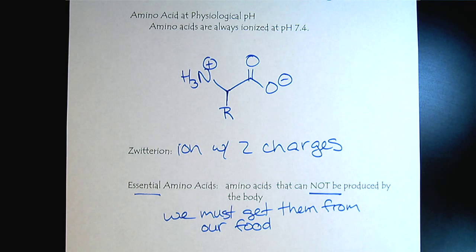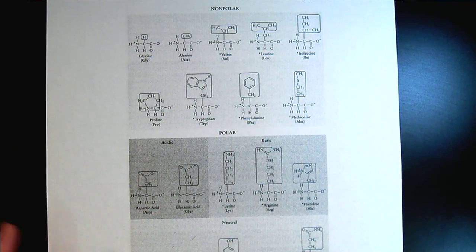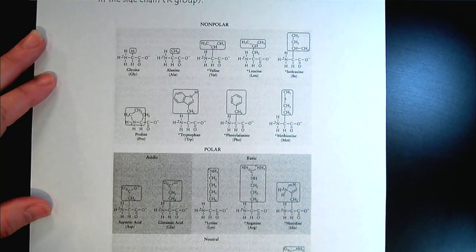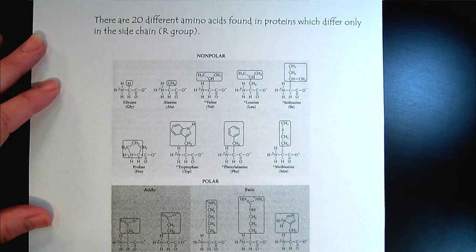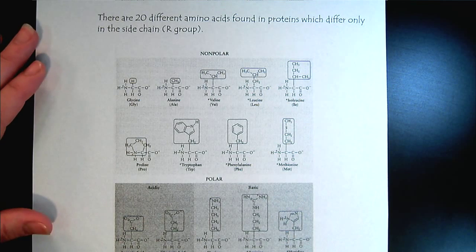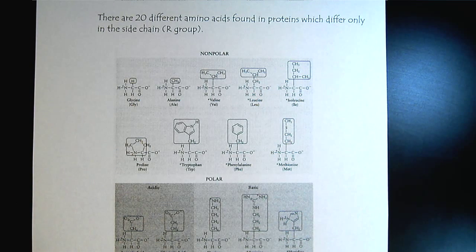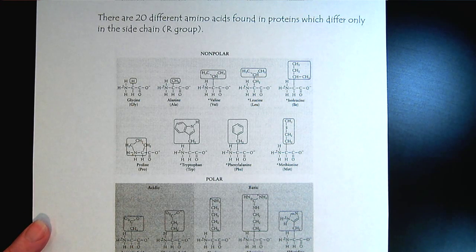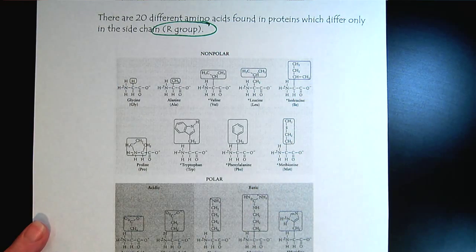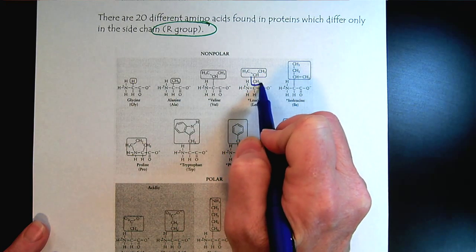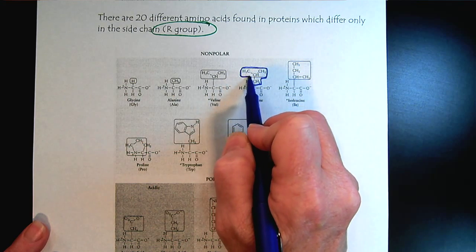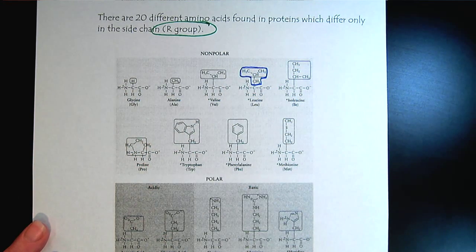Let's look more closely at these amino acids. I don't expect you to memorize them all — I will give you a list, though not quite in this form, as this gives a little too much information. You'll always have a list of the amino acids. We want to notice some characteristics by looking at the R group. There is one typo on this handout where one carbon was overlooked. What's been boxed here are the R groups.